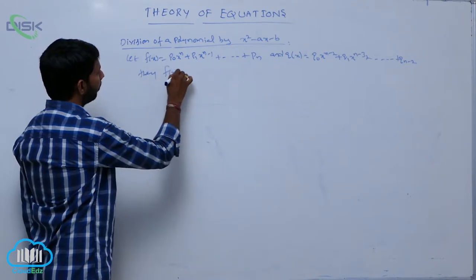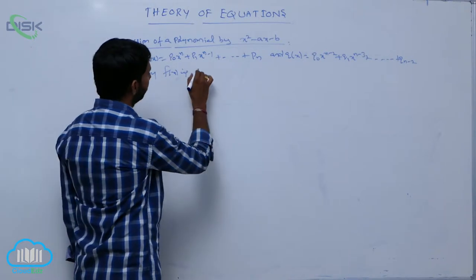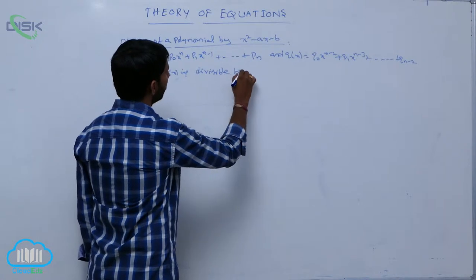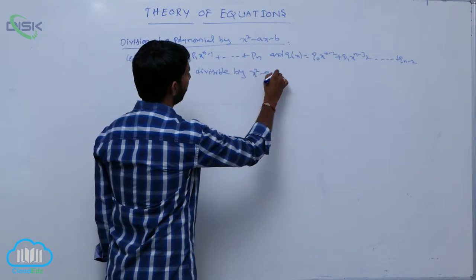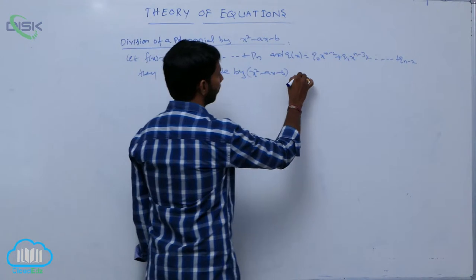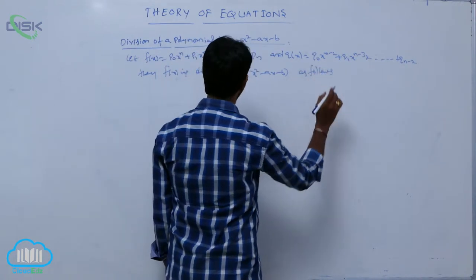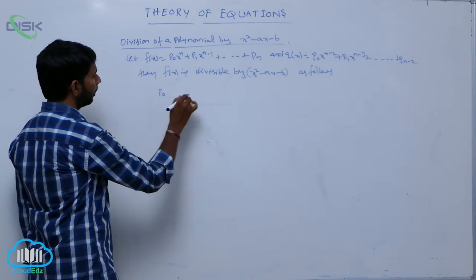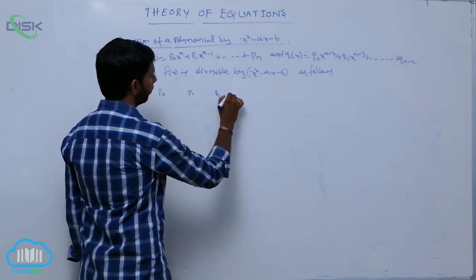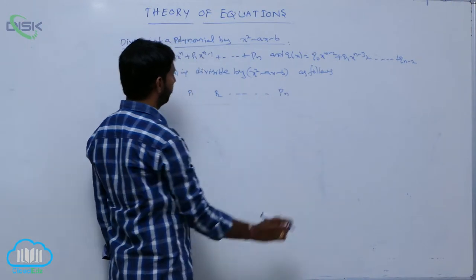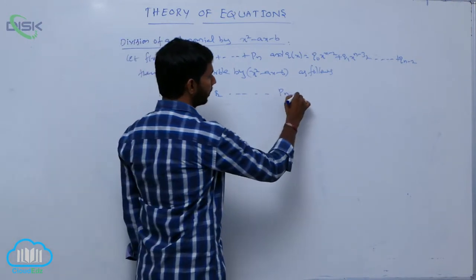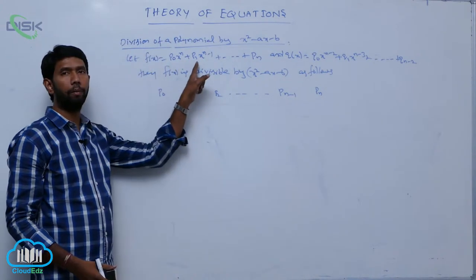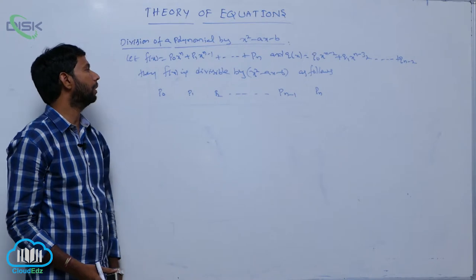Then f of x is divisible by x squared minus ax minus b as follows. Write the coefficients of the polynomial: p naught, p one, p two, and so on, p n minus one, p n.